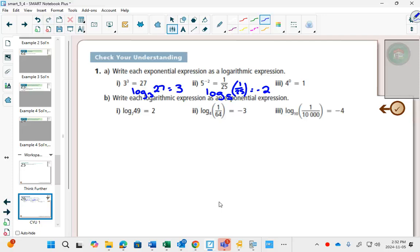And if anything to the 0 is equal to 1, then log base of anything of 1 is always going to equal 0. So log base 7 of 1, 0. Log base 10 of 1, 0.